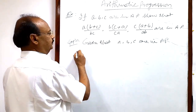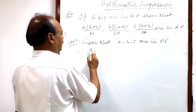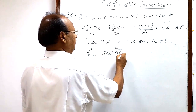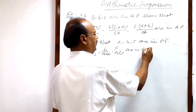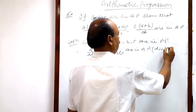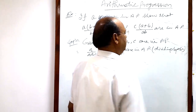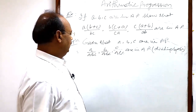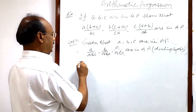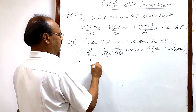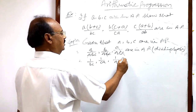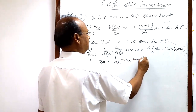Therefore, A upon ABC, B upon ABC, and C upon ABC are in A.P. — dividing by ABC. Here A will be cancelled out, here B will be cancelled out, here C will be cancelled out. Therefore, we are getting 1 upon BC, 1 upon CA, and 1 upon AB. These are in A.P.